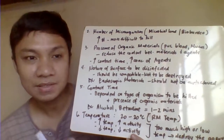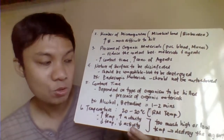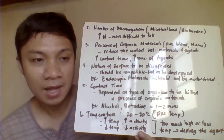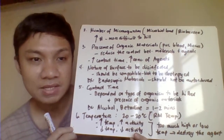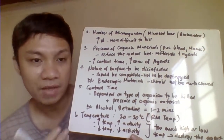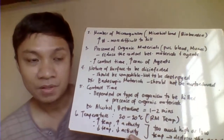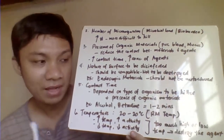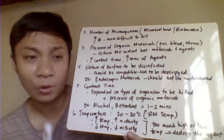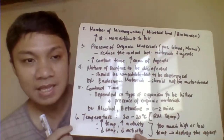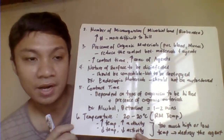Temperature is another factor. The basic temperature for disinfection or sterilization is room temperature at 22 degrees Celsius. Increasing temperature increases the activity of the agent, making it more effective. However, excessively cold temperatures reduce agent effectiveness, and extreme cold can destroy the disinfecting or sterilizing capacity of the agents.